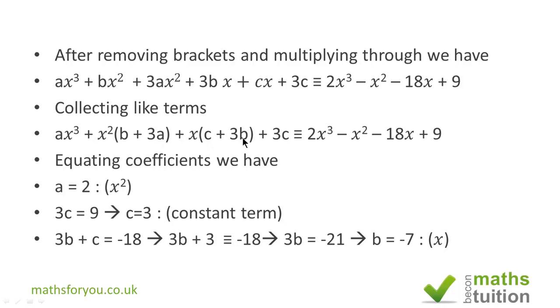For x we know that 3b + c is equivalent to -18, or is equal to -18. We already know that c is 3, so 3b + 3 is -18. So 3b is -21 and b is -7.